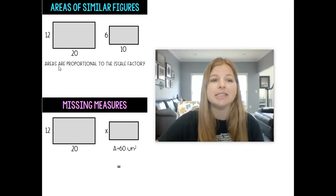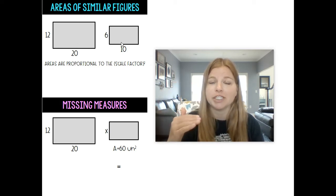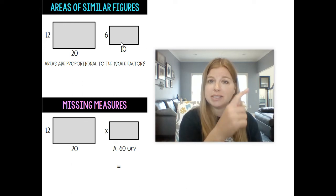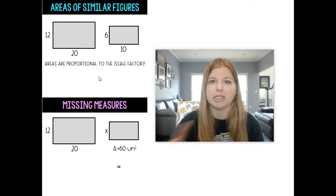This statement here says areas are proportional to the scale factor squared. So the area of one rectangle to the area of another rectangle if I set that up as a ratio would be equal to the scale factor from one rectangle to the other squared. It seems kind of confusing but let me prove that with this example here.